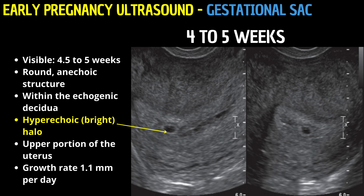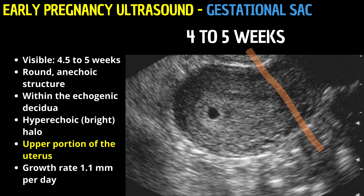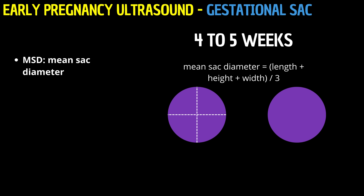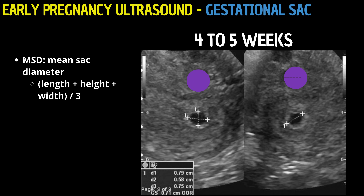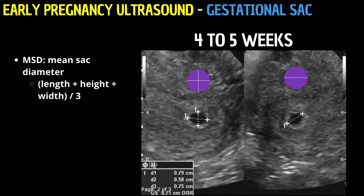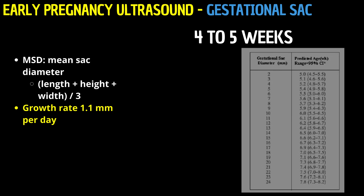This halo is not only a hallmark of early pregnancy, but also aids in distinguishing the sac from potential cysts or other uterine anomalies. The gestational sac's location is crucial — it should be nestled within the upper portion of the uterus, ensuring an optimal environment for the developing embryo. The mean sac diameter, MSD, a critical measurement at this stage, is calculated as the average of three orthogonal dimensions of the sac. While precise MSD values can vary, they are instrumental in assessing the gestational age and ensuring the pregnancy is progressing as expected.